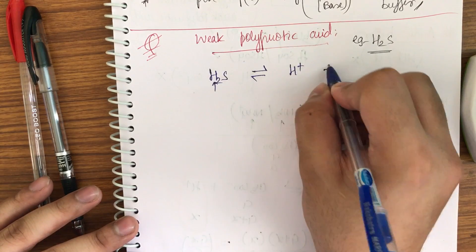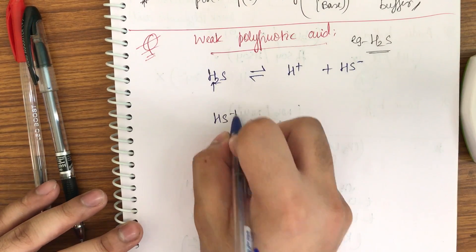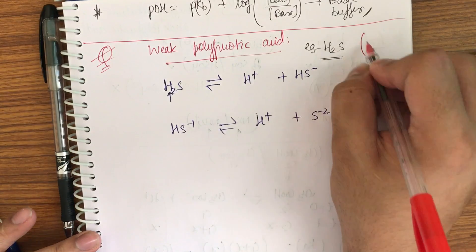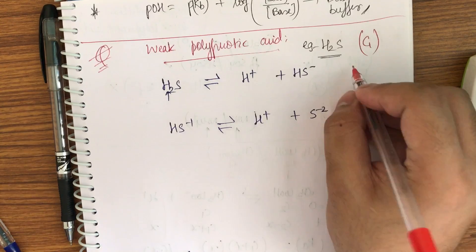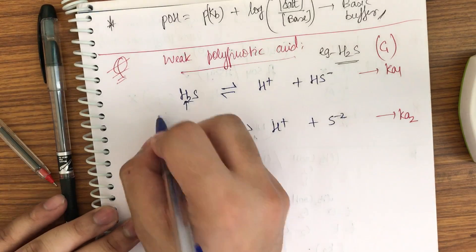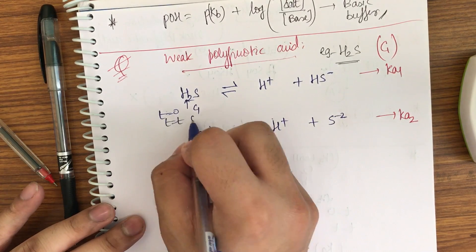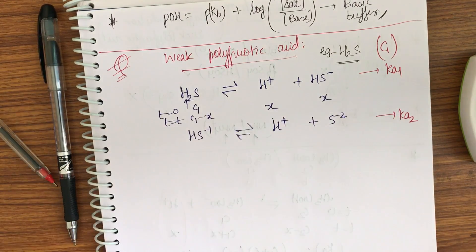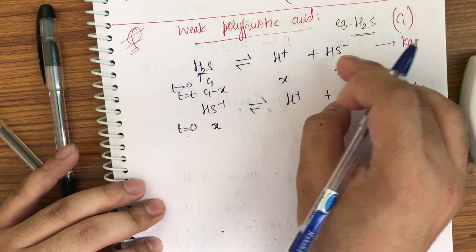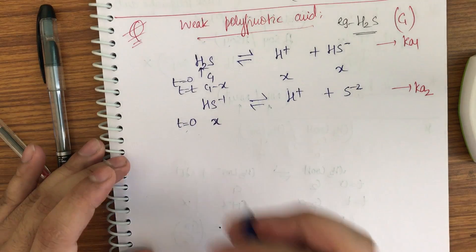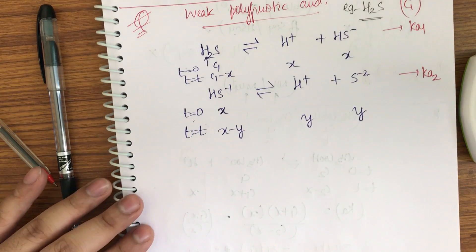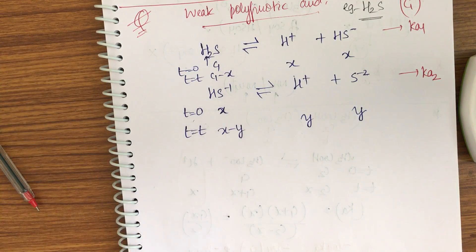First dissociation: H₂S → H⁺ + HS⁻ with Ka₁. Second dissociation: HS⁻ → H⁺ + S²⁻ with Ka₂. For the first reaction, initial concentration is C₁; at equilibrium: C₁ − x, x, x. For the second reaction, starting concentration of HS⁻ is x; at equilibrium: x − y, y, y for S²⁻.